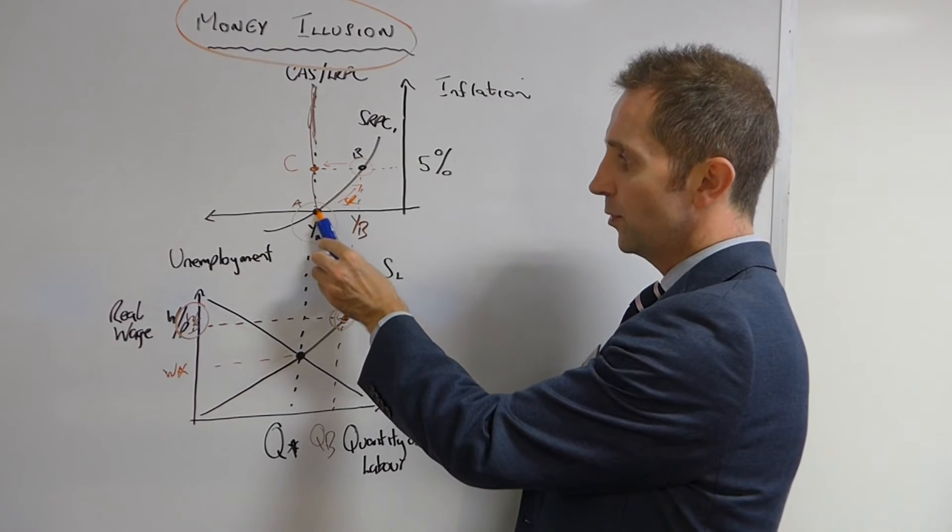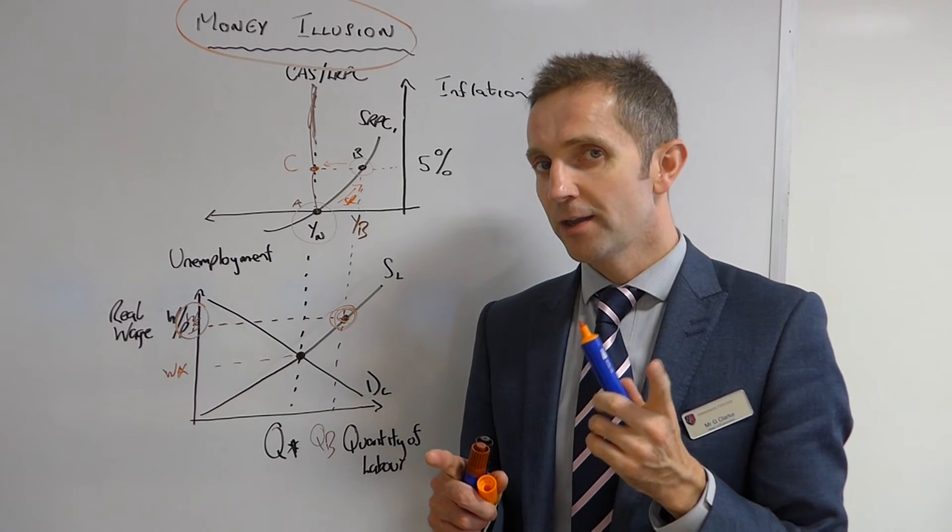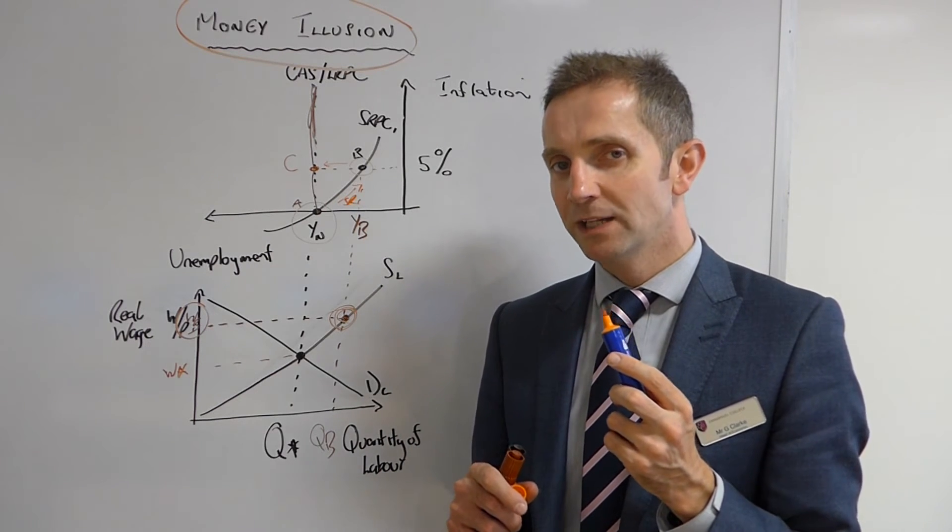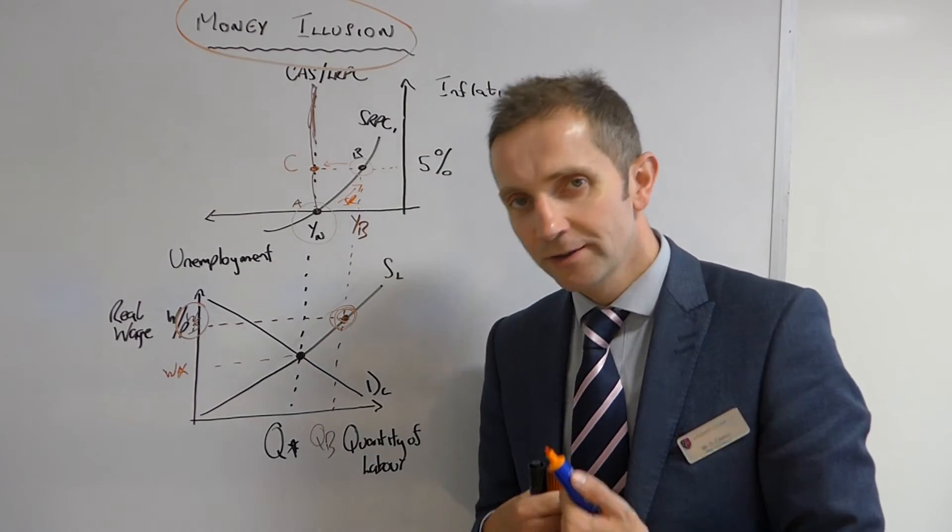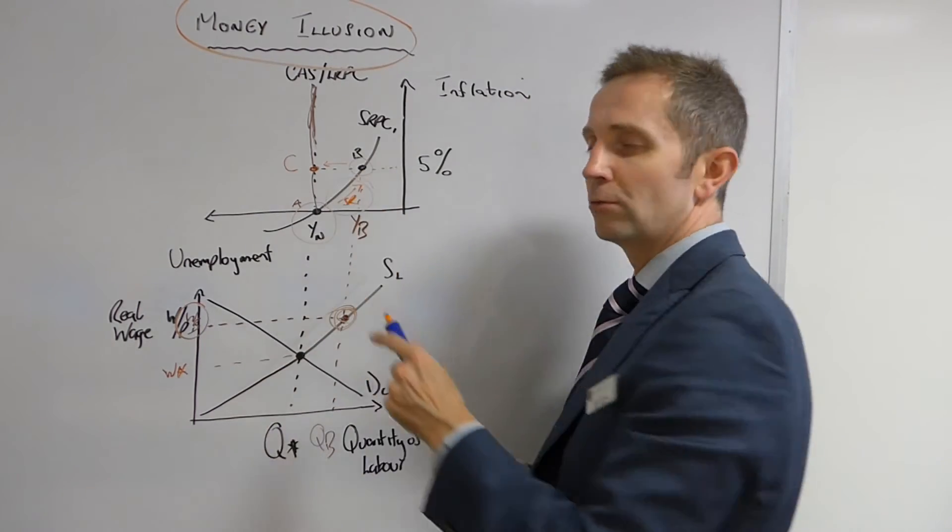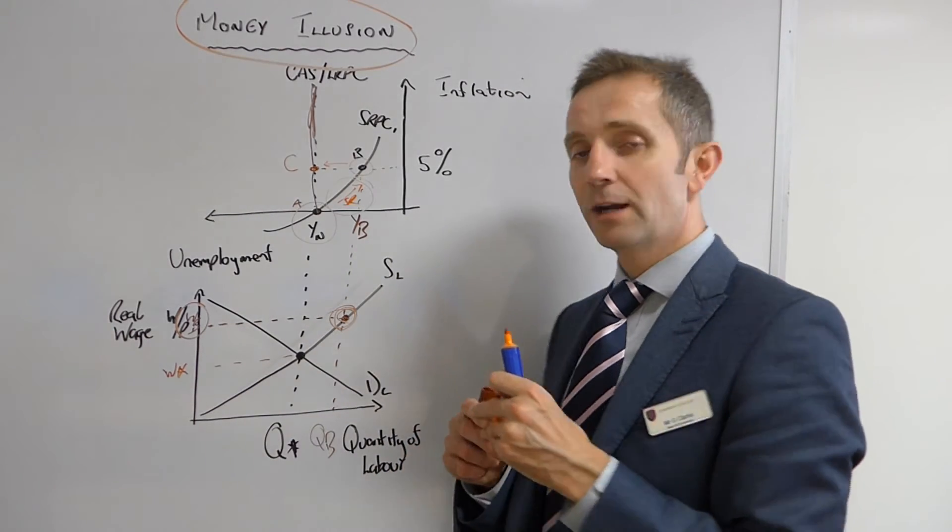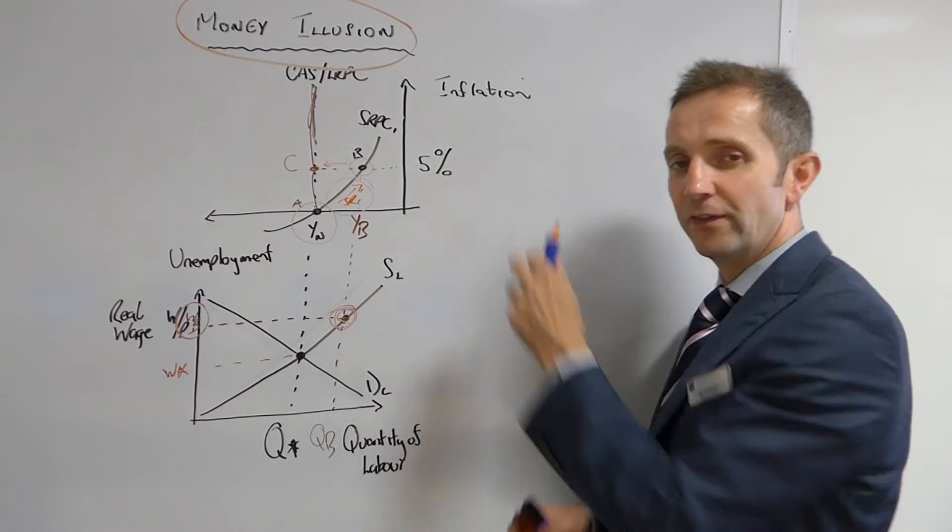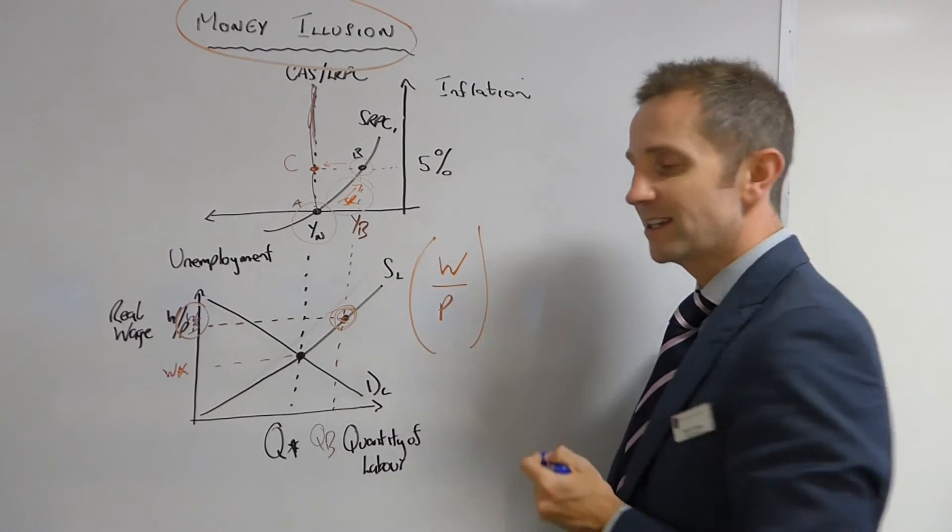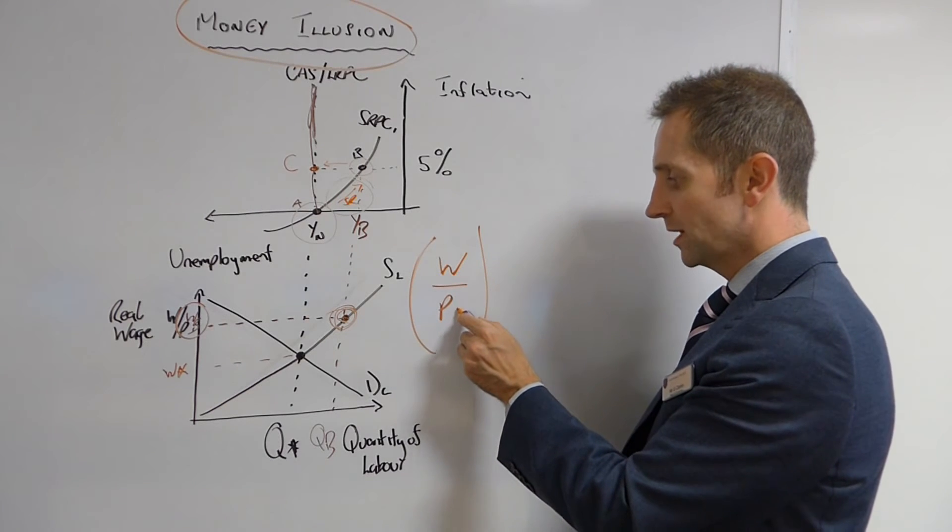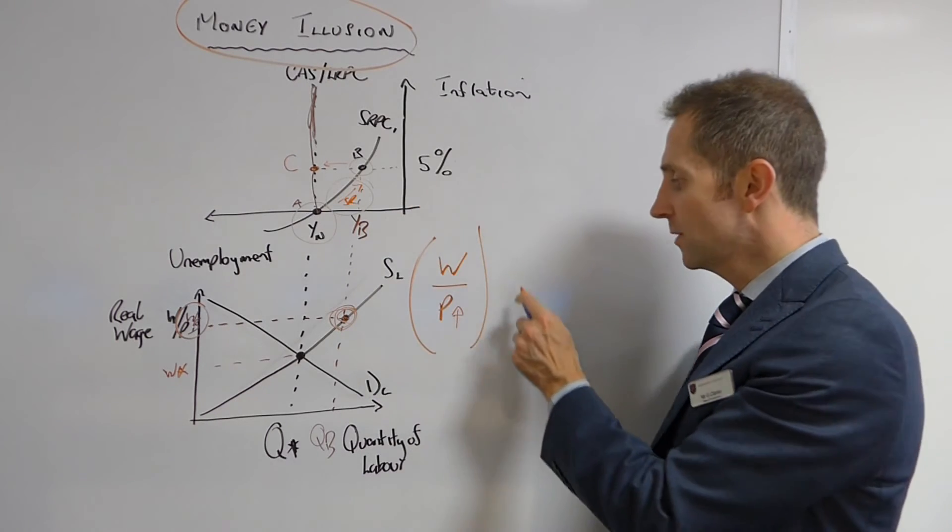And so when we move from point A to point B, workers for some reason or another, they are believing that actually their real wages are rising and so there's more labor being supplied into the marketplace. Well of course this is not the case at all and in the short run, these workers, they will eventually twig, they will eventually realize that actually their real wage has not gone up. Because if the inflation rate is going up, remember the real wage is W over P, that's the real wage in its entirety, if the inflation rate is going up and the money wage remains the same, then obviously the whole value of the real wage is actually falling.